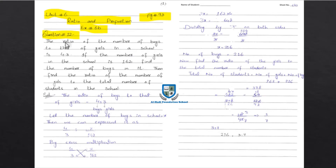Question 12: The ratio of the number of boys to that of the girls in a school is 4 to 3.